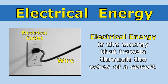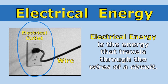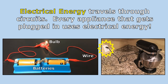Electrical energy is the energy that travels through the wires of a circuit, and we normally just call this electricity. Anytime you see something plugged into an electrical outlet, it means it's using electrical energy as its energy source. Every appliance that gets plugged in uses electrical energy.